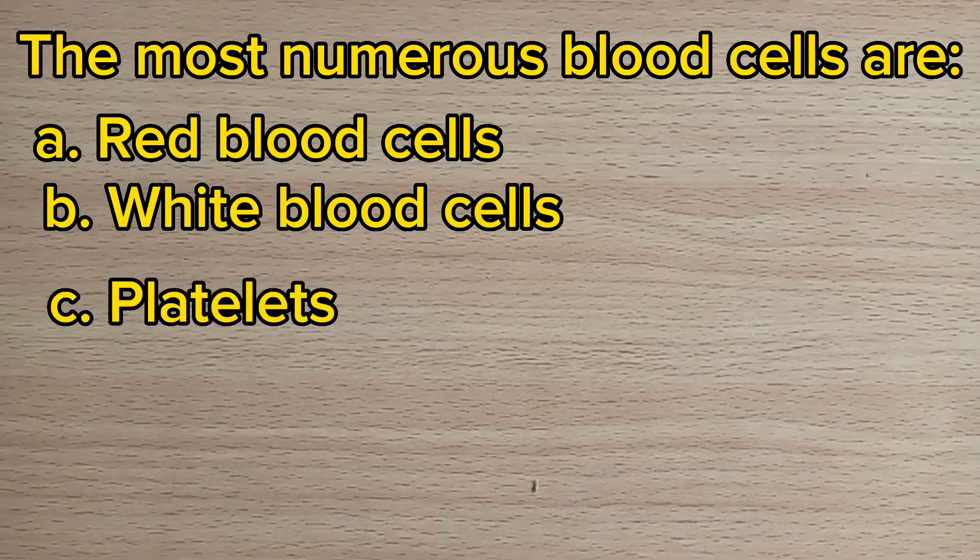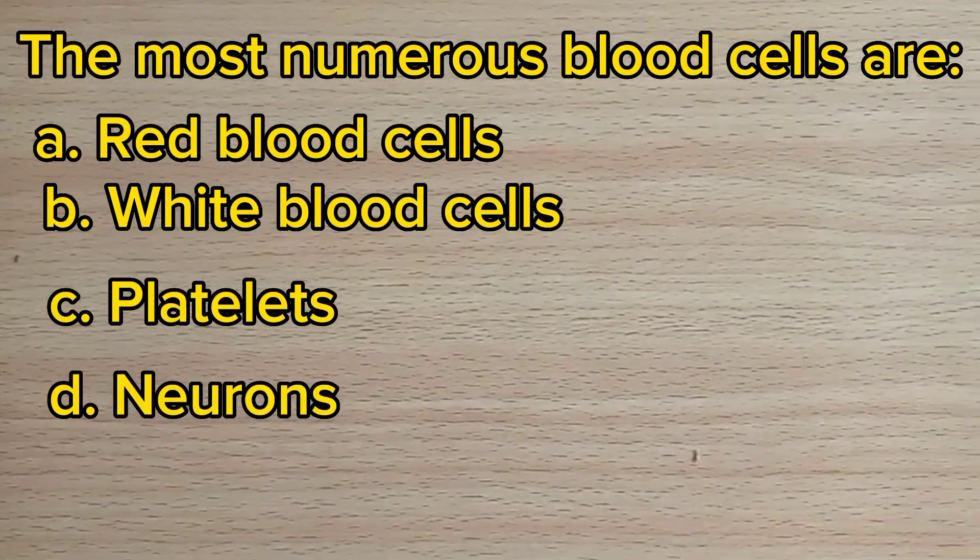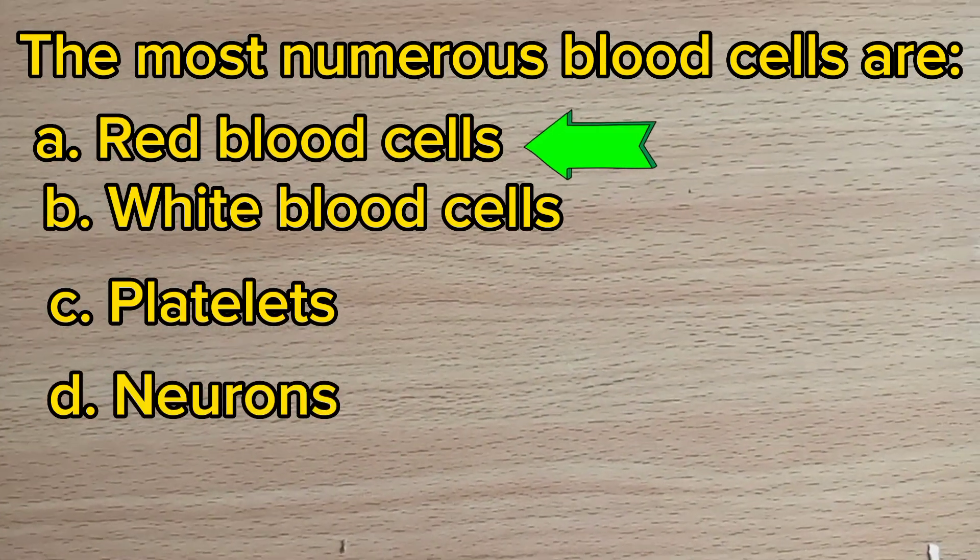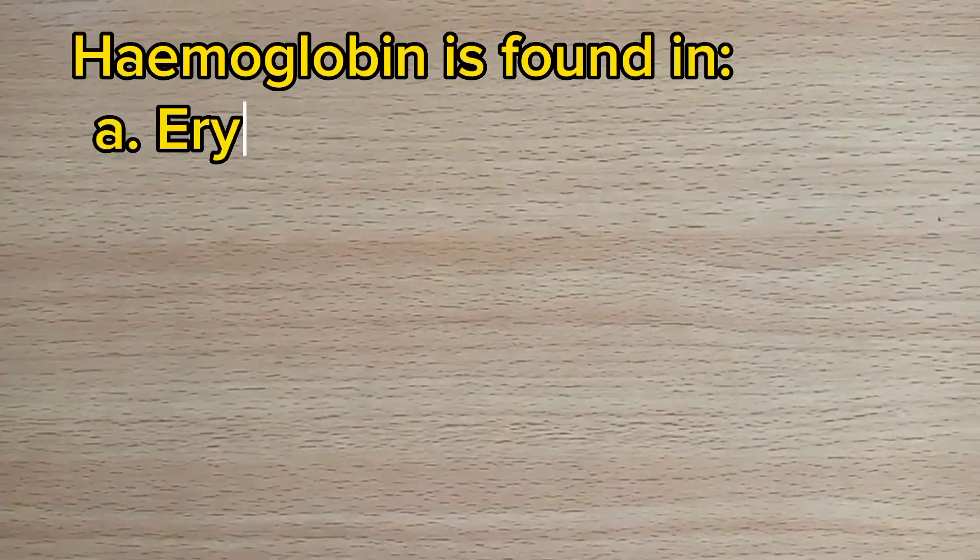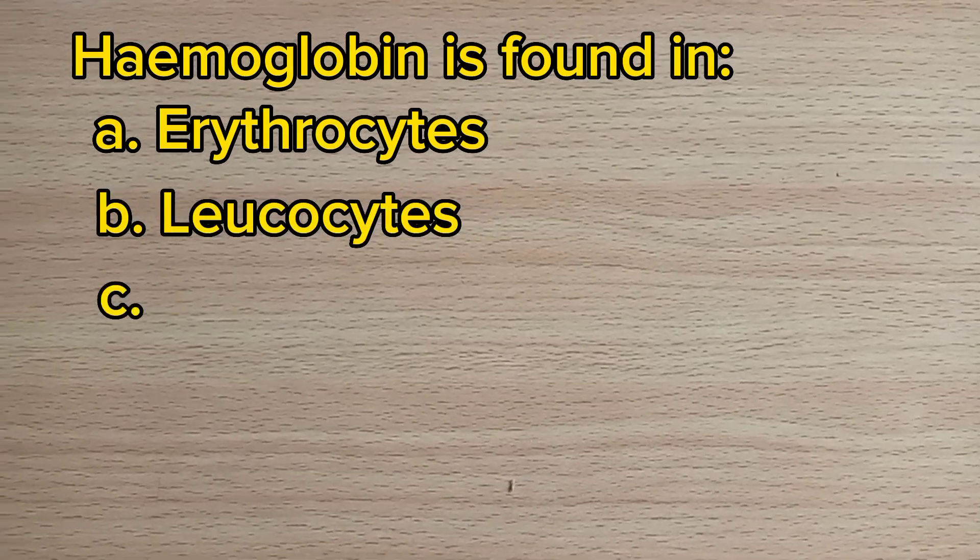C. Platelets, D. Neurons. The answer is A, red blood cells. Number ten: Hemoglobin is found in: A. Erythrocytes, B. Leukocytes, C. Thrombocytes, D. Hepatocyte. The answer is A, erythrocytes.